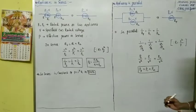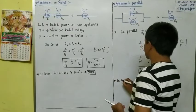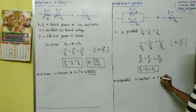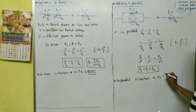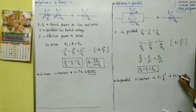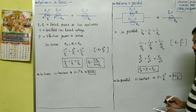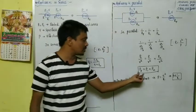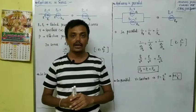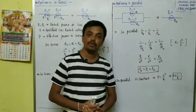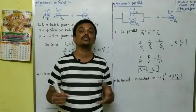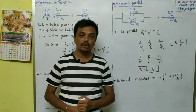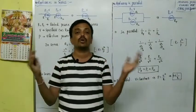In parallel combination, voltage is constant. We use the power formula P = V²/R. Power is inversely proportional to resistance. In our homes, all appliances are connected in parallel. The total power consumed is the sum of all individual powers. If you use more appliances, more power is consumed, because in parallel combination we add all the powers.